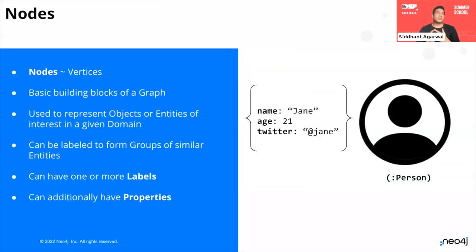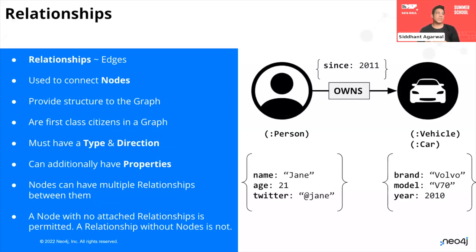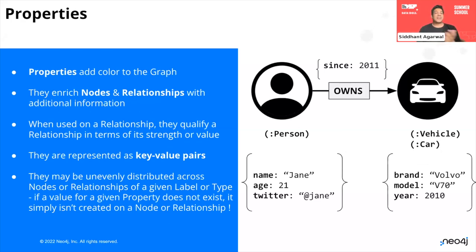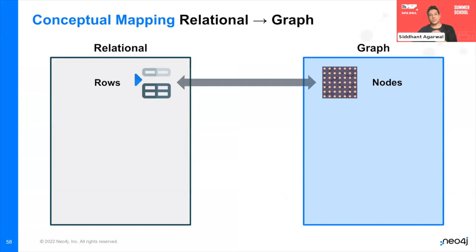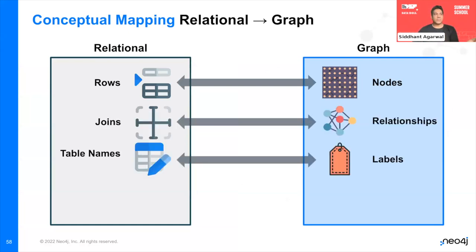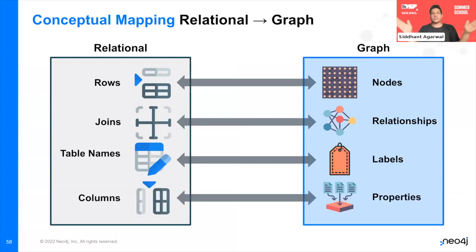Quick recap: nodes are your vertices — the building blocks of a graph, used to represent objects or entities. They can be labeled to form groups of similar entities, can have one or more labels, and can have properties. Relationships are edges — they connect nodes, provide structure to the graph, have a type and a direction, can have properties, and there can be multiple relationships between nodes. Properties add color to the graph, enriching nodes and relationships with additional information represented as key-value pairs. Mapping to relational databases: rows become nodes, joins become relationships, table names become labels, and columns become properties.